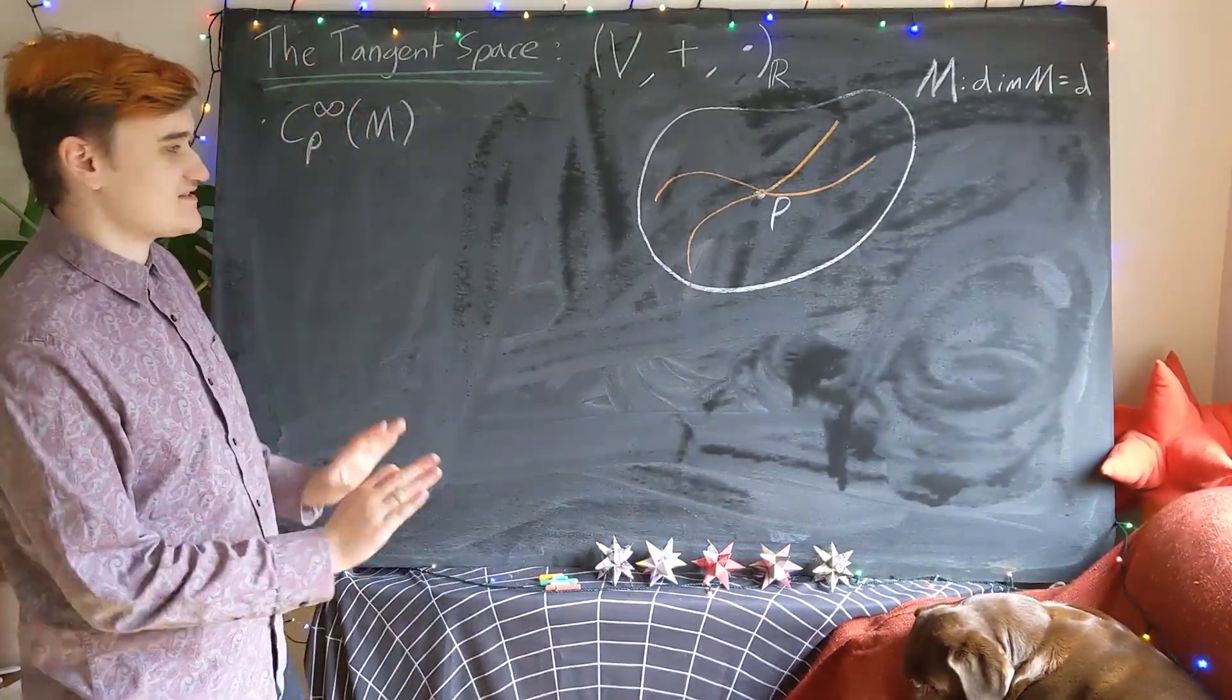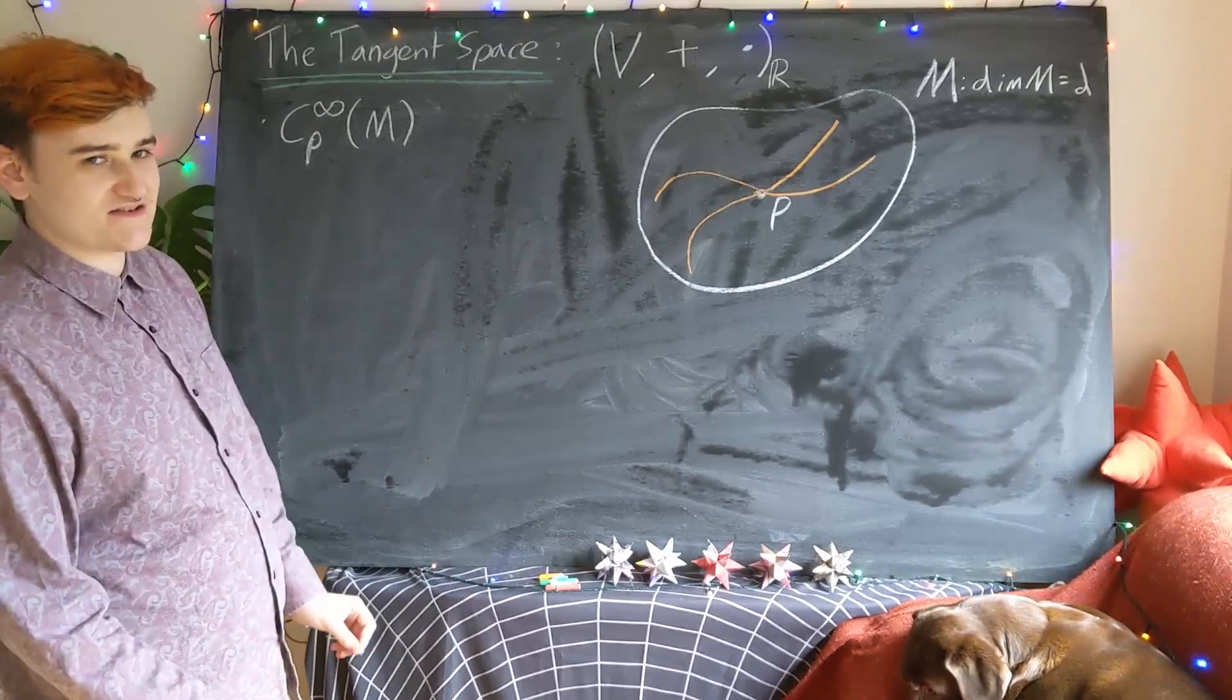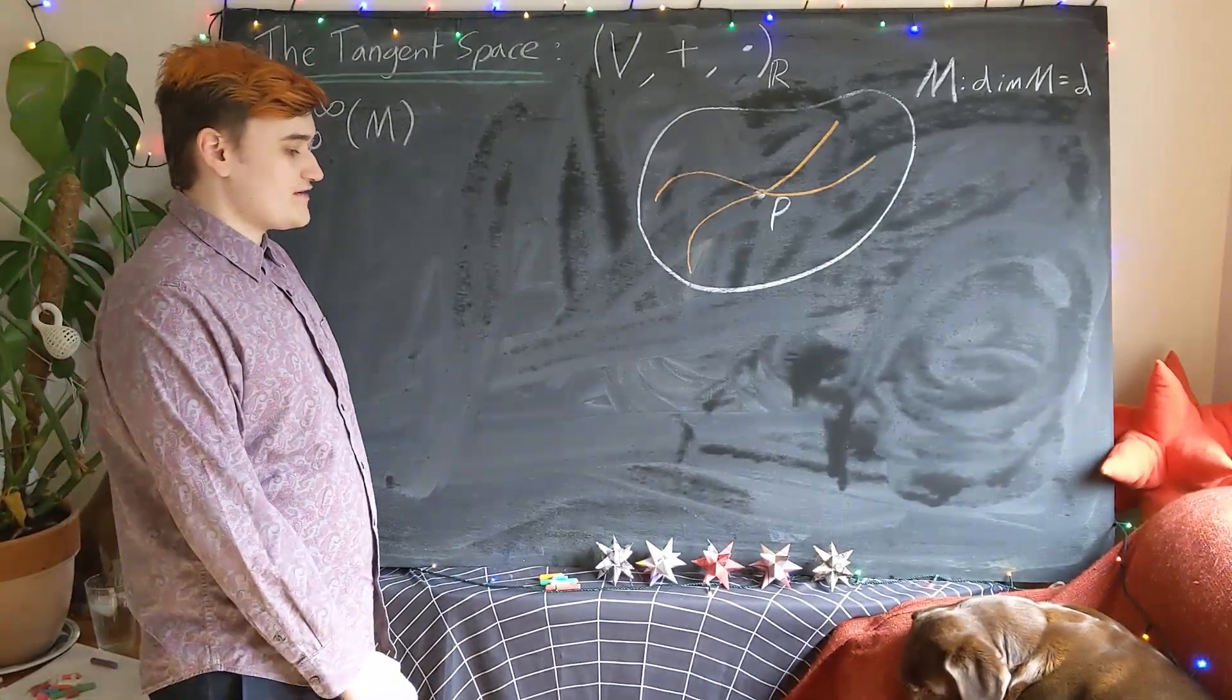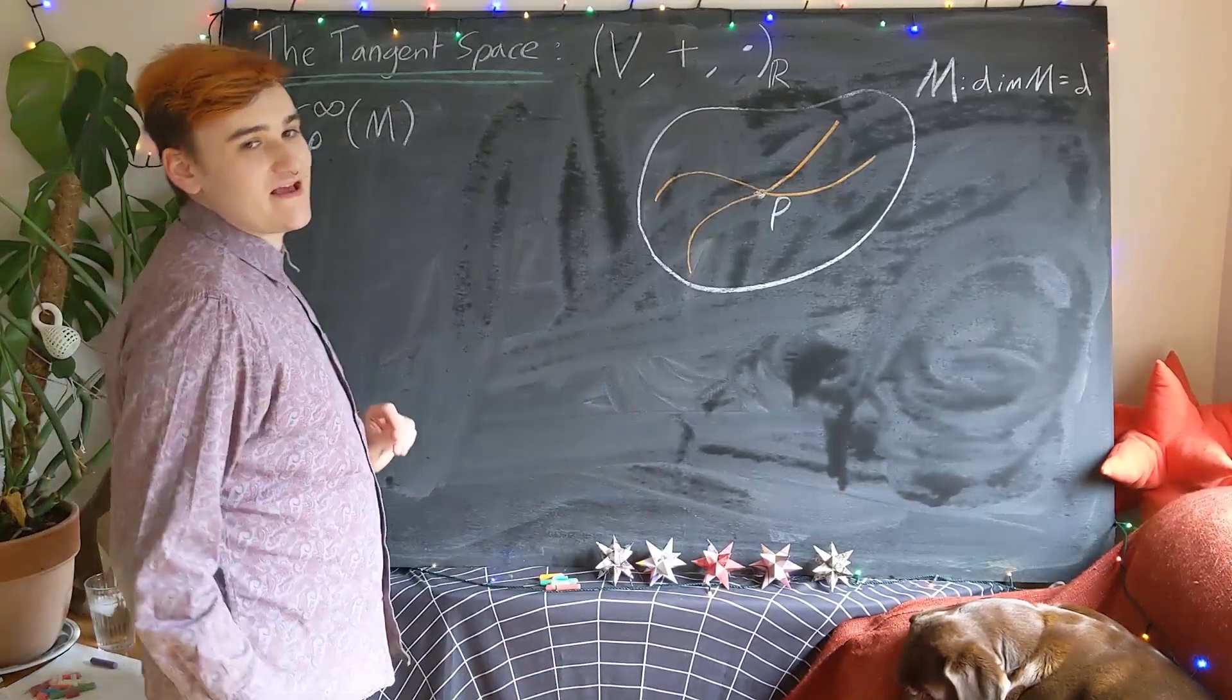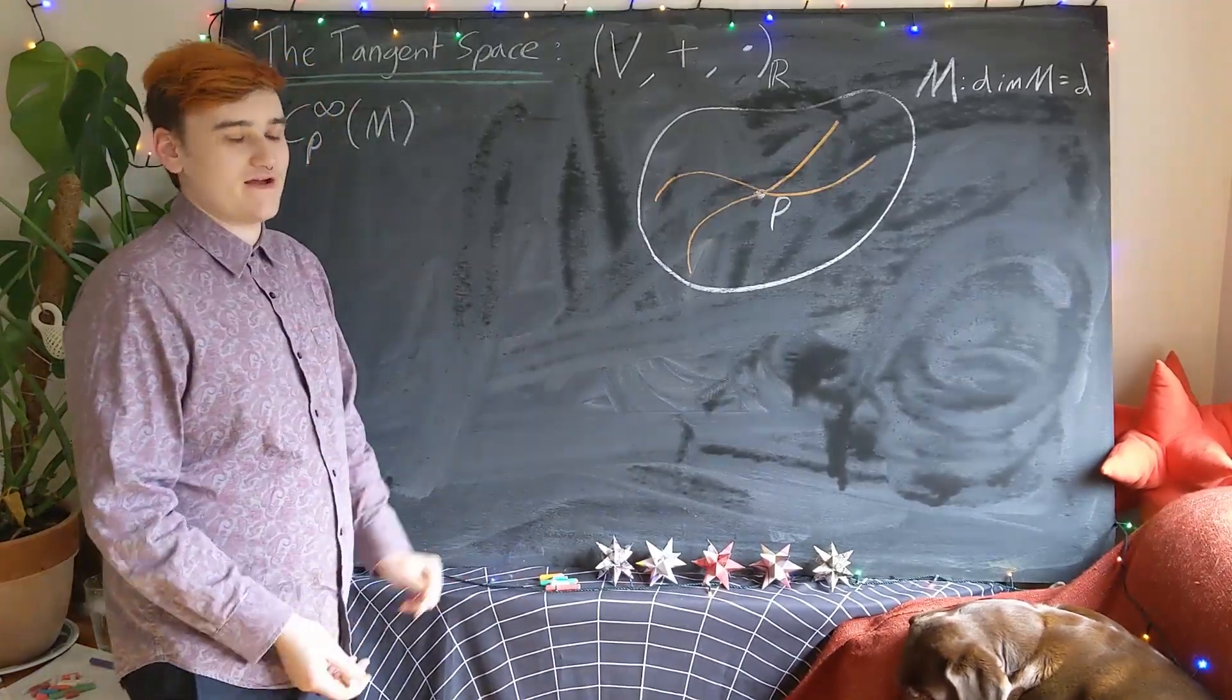Whilst this is a vector space, it's kind of a not very useful vector space because it's infinite dimensional and has a few other undesirable properties. But we're going to need to use it in our construction of the desirable vector space.